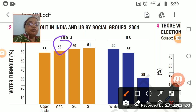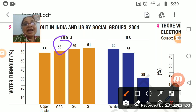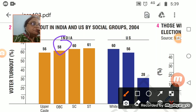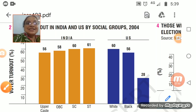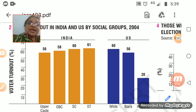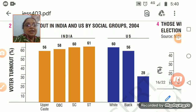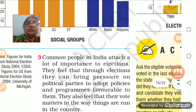Just look at the voter turnout in the US — you may have studied these kinds of graphical presentations in mathematics. This is one of the very prominent things about voters. In the United States, just see: the white people, the blacks, and the Hispanics — voter turnout differs on a very high scale. In India, the most scheduled caste and scheduled tribe voters are the most interested in giving votes.